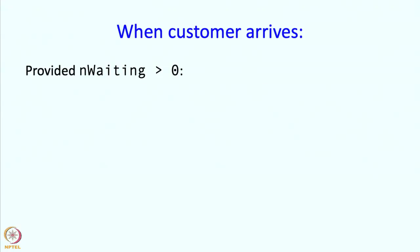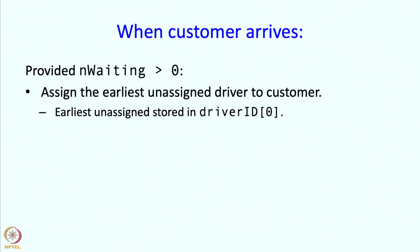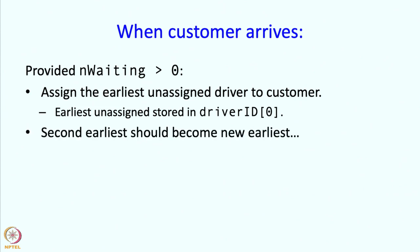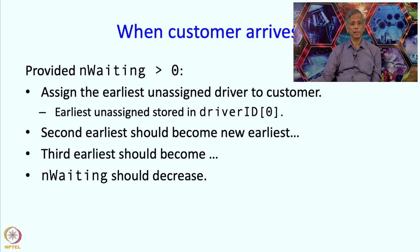When a customer arrives, we can process the customer only if nWaiting is greater than 0 — there must be taxi drivers waiting. Otherwise we tell the customer to try again. If nWaiting is greater than 0, we assign the earliest unassigned driver, whose ID is stored in driverID[0]. But then the second earliest must become the new earliest, so we need to shift all remaining drivers down and decrement nWaiting.